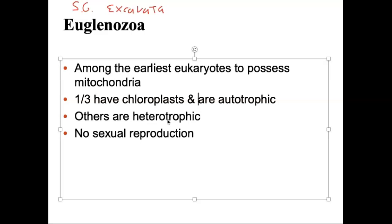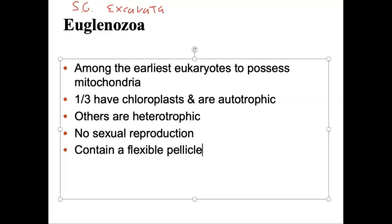We don't observe sexual reproduction within Euglenozoans — no sex. They can exchange some genetics asexually, but we don't see male and female Euglenozoans. They're going to contain a thing known as a flexible pellicle. These are basically little structural rods — kind of like cartilage. Grab the tip of your nose and wiggle it — you've got structural cartilage in there. Something comparable to that is found in the members of Euglenozoa.